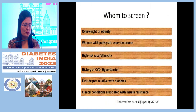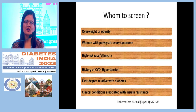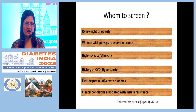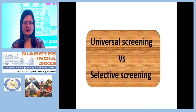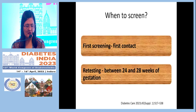Regarding whom to screen: high-risk patients include those with obesity or overweight, women with PCOD, high-risk ethnicity, cardiovascular disease or hypertension, first-degree relatives with diabetes, and conditions associated with insulin resistance. However, guidelines now recommend universal screening due to the high prevalence of diabetes in the population. At the first visit, all pregnant females should be screened for diabetes.